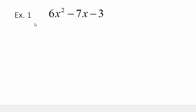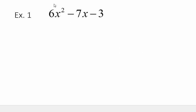So when you approach a problem like this, when a is bigger than 1, you always want to look and see is there a greatest common factor I can take out of every term? If there is, then you definitely need to do that. If there's not, then you go to the box.